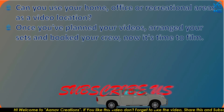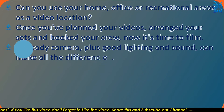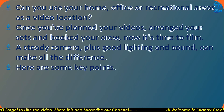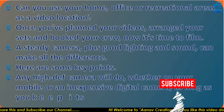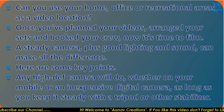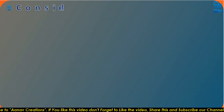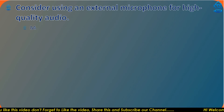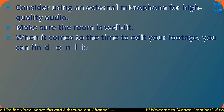Once you have planned your videos, arranged your sets, and booked your crew, it's time to film. A steady camera plus good lighting and sound can make all the difference. Any high-definition camera will do — whether on your mobile or an inexpensive digital camera — as long as you keep it steady with a tripod or other stabilizers. Consider using an external microphone for high-quality audio, and make sure the room is well lit.